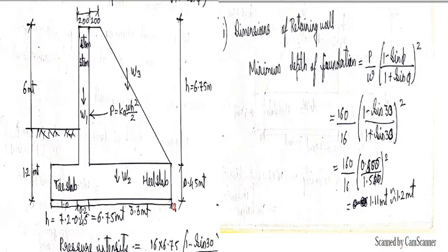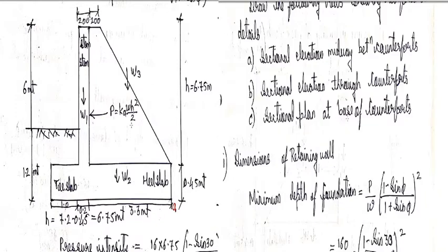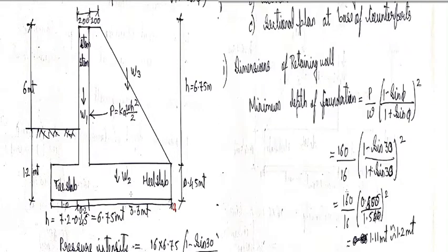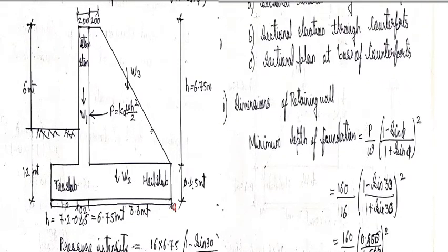First is giving the dimension to the retaining wall. As we have discussed already in the previous design, the minimum depth of the foundation is given by P by W 1 minus sin phi upon 1 plus sin phi. Where P is 160, that is nothing but the SBC of soil 160 divided by W which is the density.